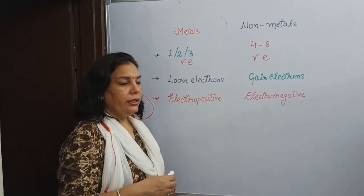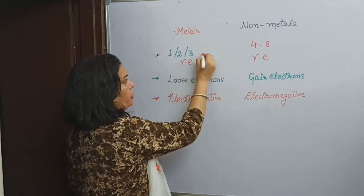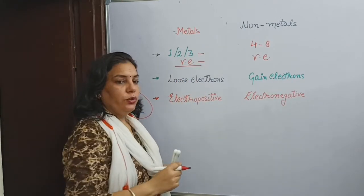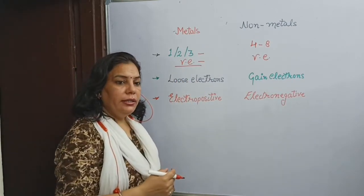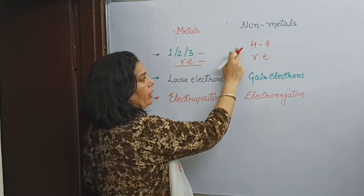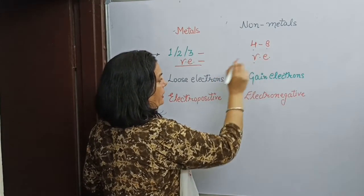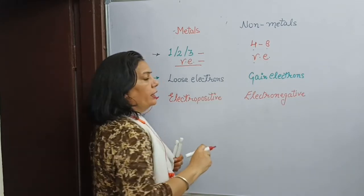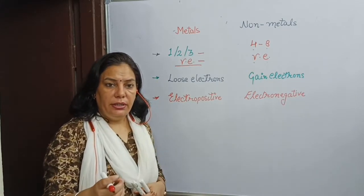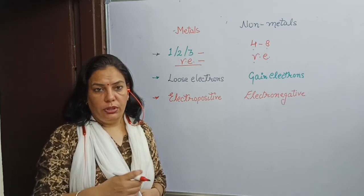Metals have 1, 2 or 3 electrons in their outer shell and these electrons are known as valence electrons, whereas non-metals have 4 to 8 valence electrons. Each and every element has a tendency to acquire noble gas configuration.